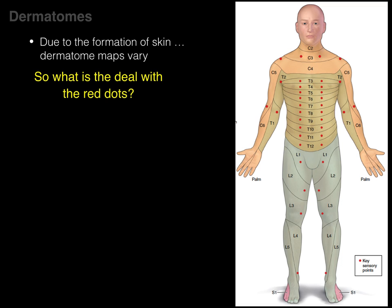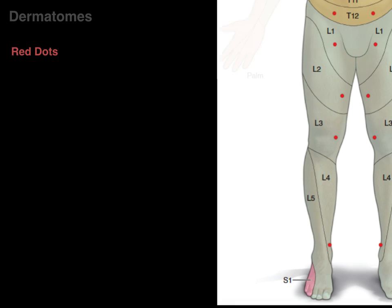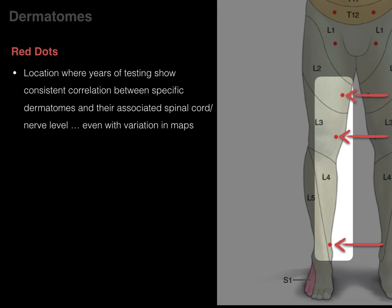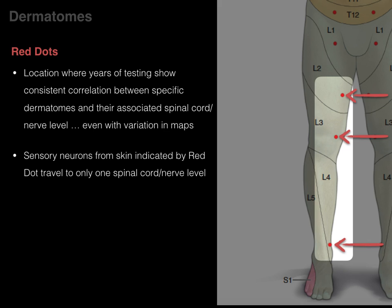So what is the deal with the red dots? It goes back to the idea that there's variation in dermatome maps. The red dots are a location where years and years of testing have shown a consistent correlation between a specific dermatome and its associated spinal cord level, even with variation in dermatome maps. In other words, sensory neurons from the skin indicated by the red dot travel to only one spinal cord or nerve level.